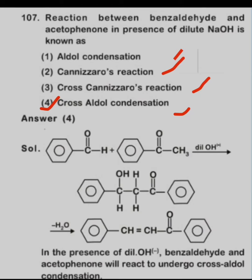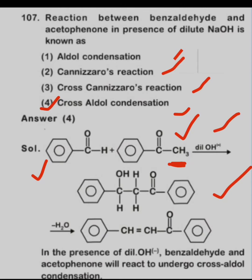In this reaction, benzaldehyde and acetophenone condense with each other. Acetophenone contains three alpha hydrogens, while benzaldehyde is a different type of aldehyde. When they condense in the presence of dilute NaOH, an aldol product forms, which on heating undergoes dehydration to give an alkene.